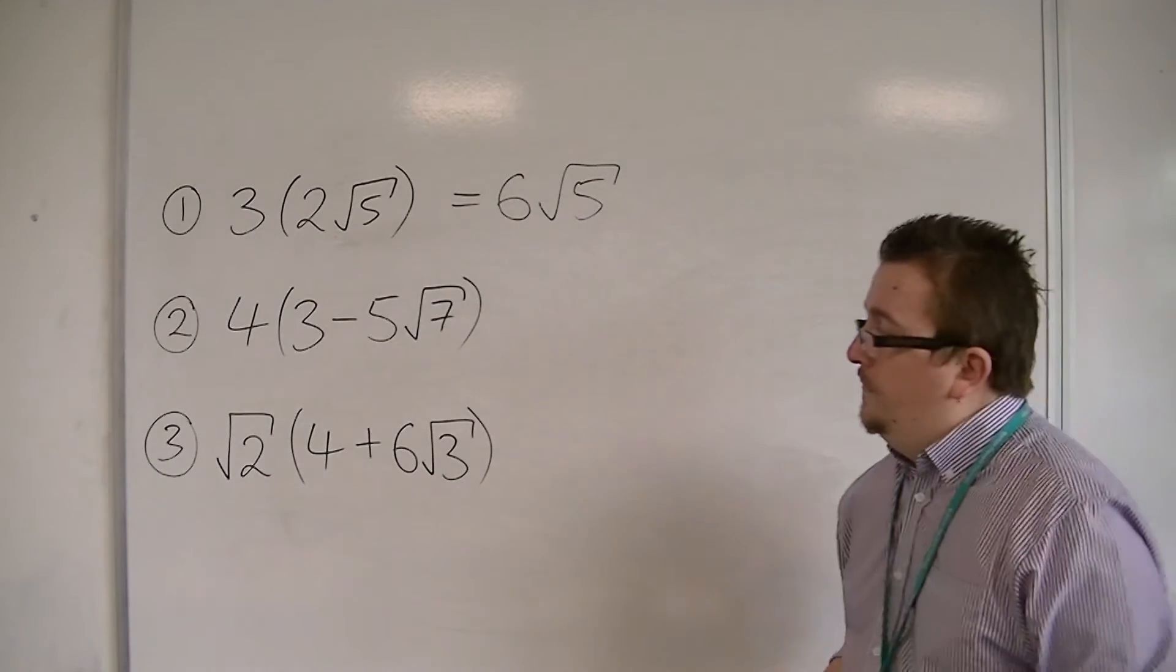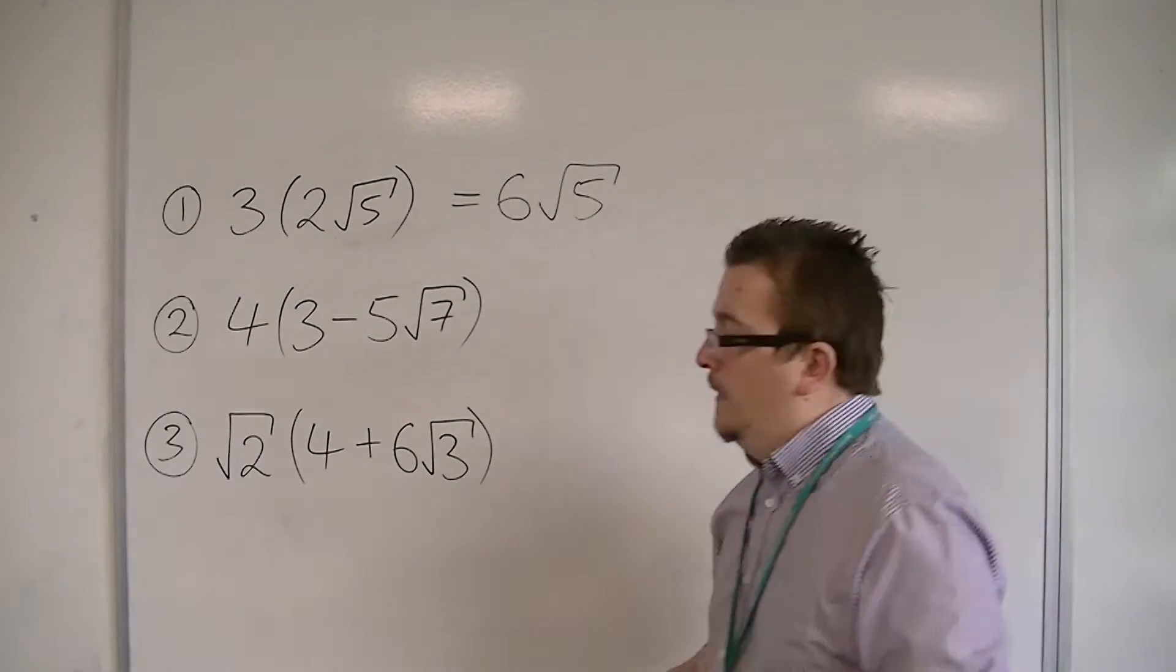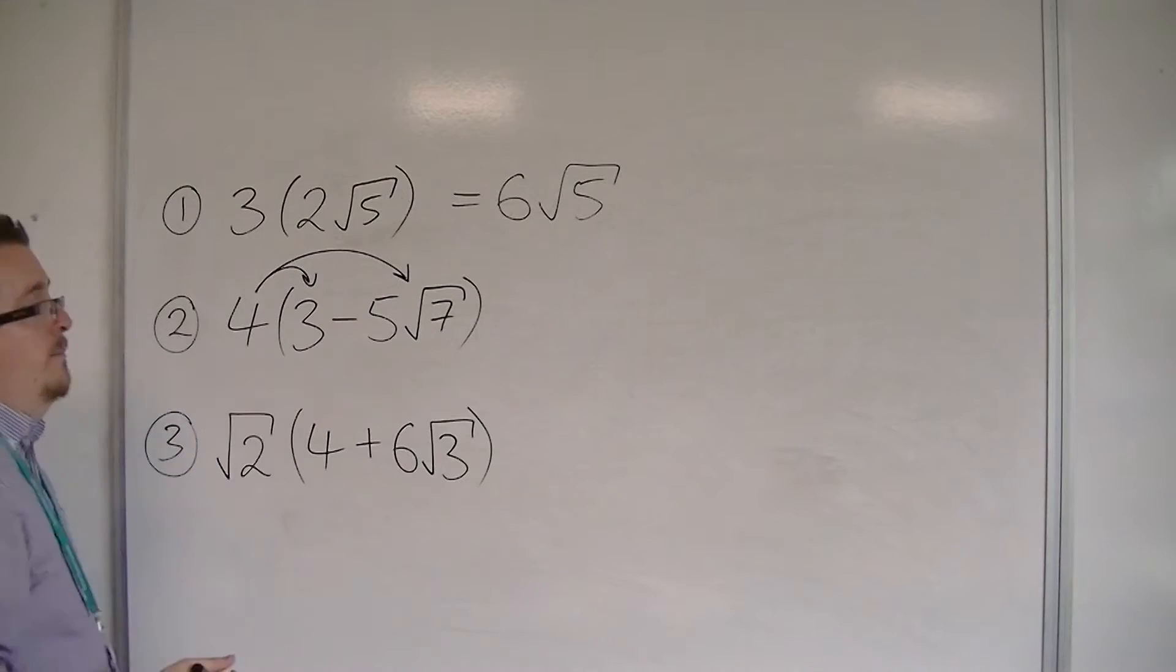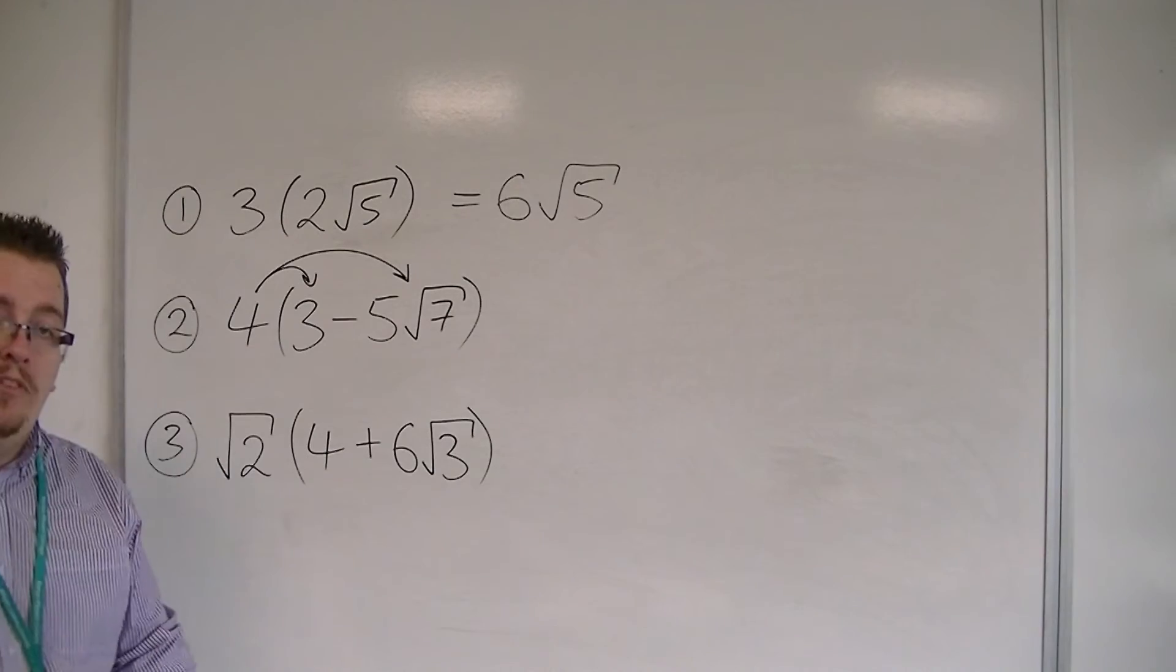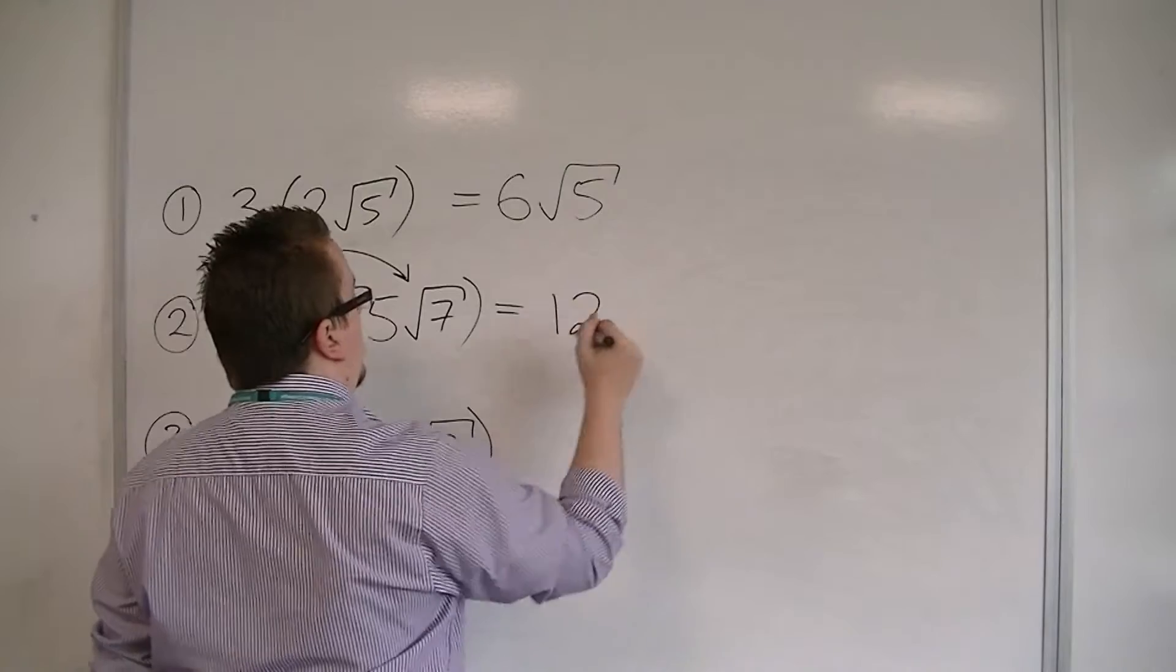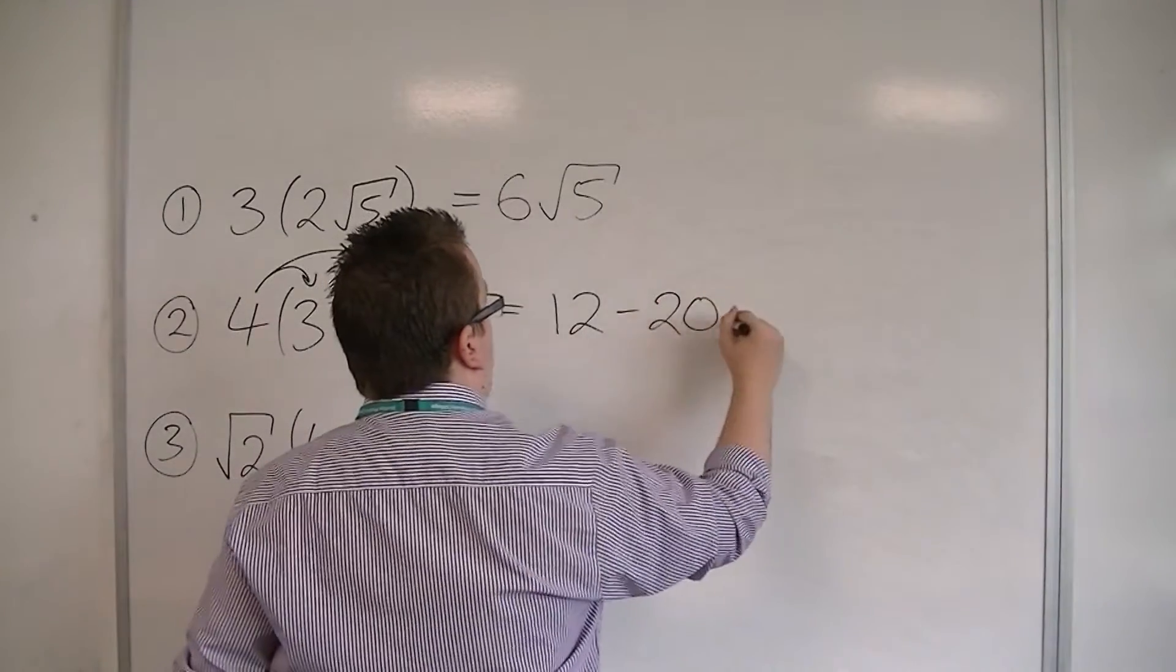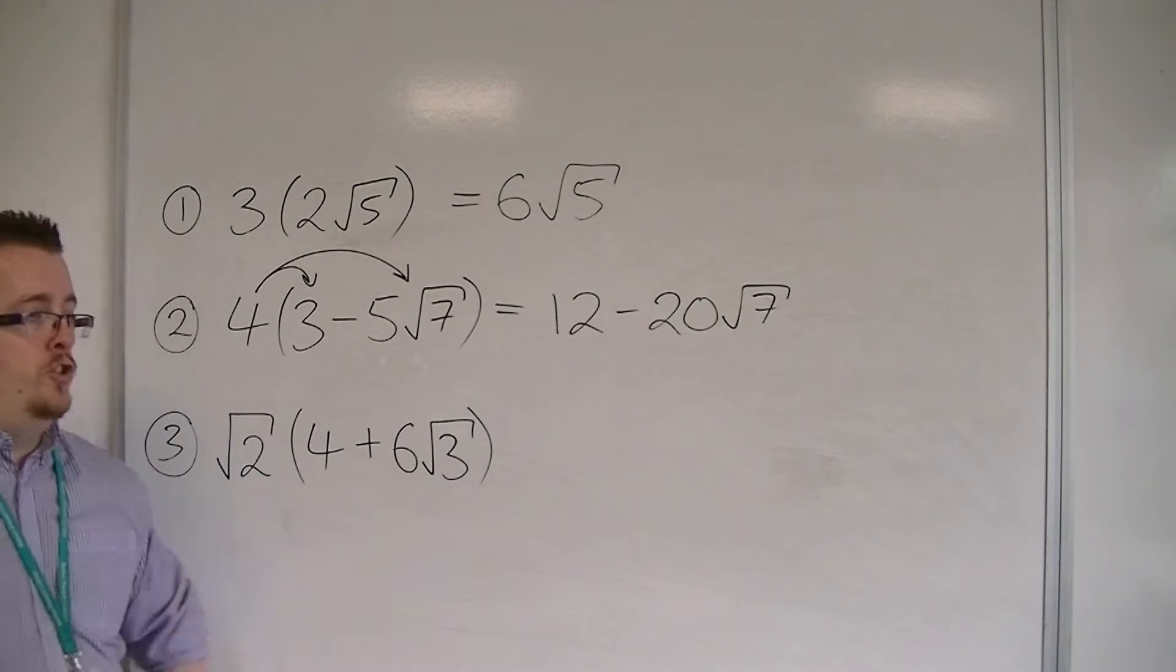So then we've got number two. Four lots of three take away five root seven. So you can work this in much the same way as you've done expanding brackets before. You might have used arrows, making sure that you are multiplying that single term by each of the terms inside the bracket. So we've got four times three to start off with, that's twelve. And then we've got four times minus five root seven. Four times five is twenty, so we have minus twenty root seven. So there the root seven hasn't changed whatsoever.